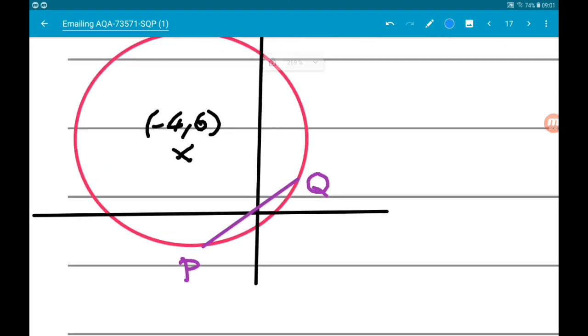So we know our centre is at minus 4, 6 and O is the midpoint between P and Q. So they are going to have to roughly be placed where they are on the diagonal. Now we know that O is the midpoint of PQ.